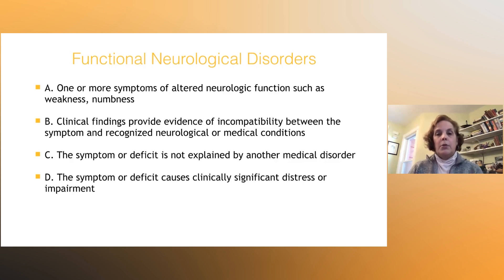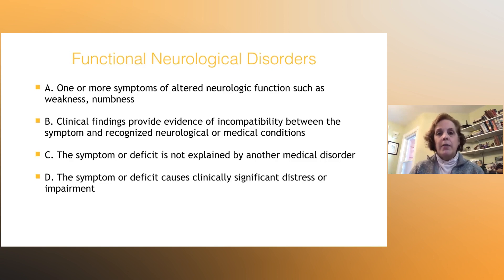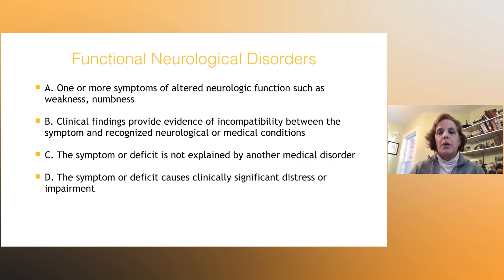This is a rule-in diagnosis, where the neurologist uses the clinical exam as well as other neurophysiologic tests, such as an EEG — which is called a brainwave test — or MRIs, structural imaging, in addition to our neurologic exam, to provide evidence of incompatibility between the symptom and the recognized neurologic or medical condition. The symptom or deficit cannot be explained by another medical disorder, and this deficit causes clinical distress and impairment to the patients.